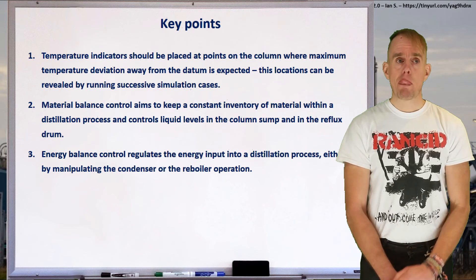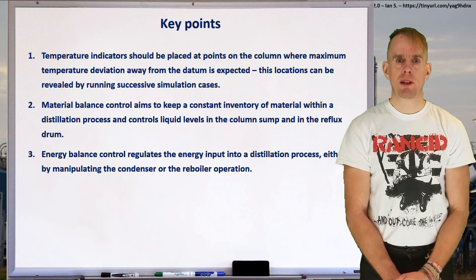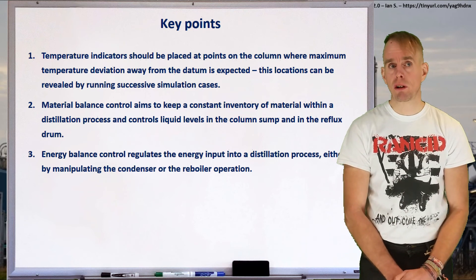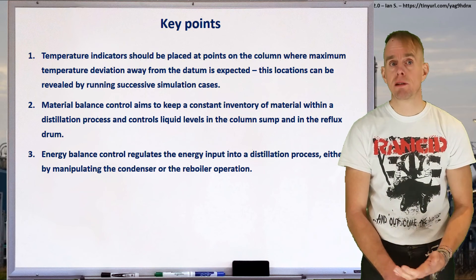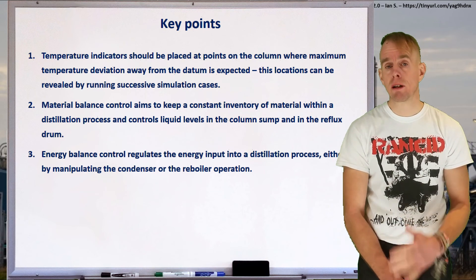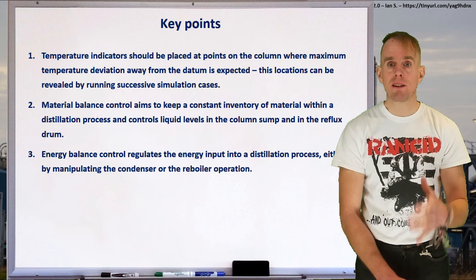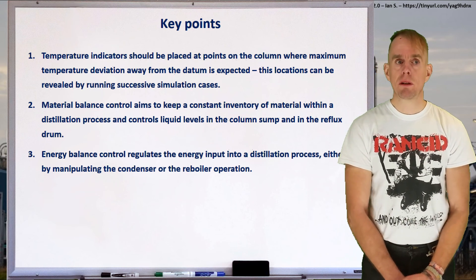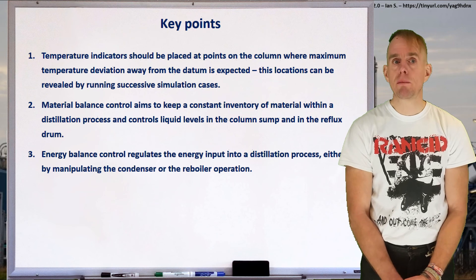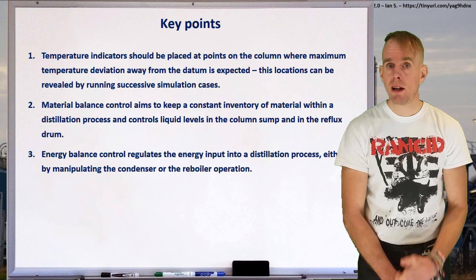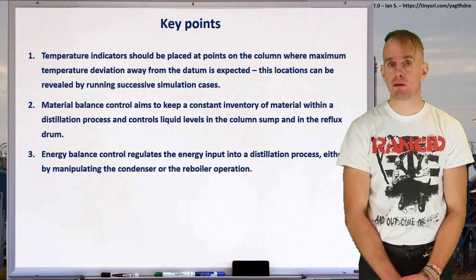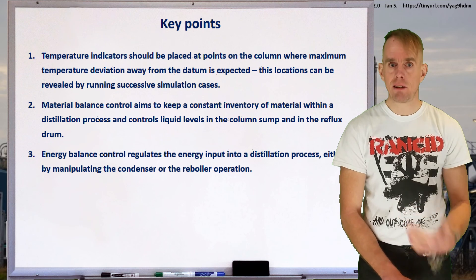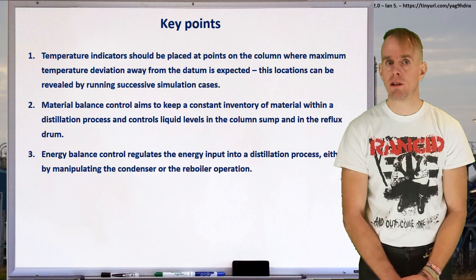Let's recap a few key points. For inferring specification, temperature indicators should be placed at points on the column where maximum temperature deviation away from the datum is expected. These locations can be revealed by running successive simulation cases and compiling the data graphically. We looked at two control schemes: material balance control, which aims to keep a constant inventory of material within the distillation process by controlling liquid levels in the column sump and reflux drum; and energy balance control, which regulates the energy input into a distillation process either by manipulating the condenser or the reboiler.